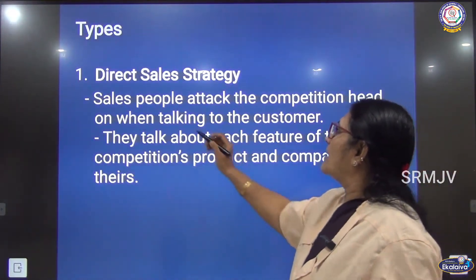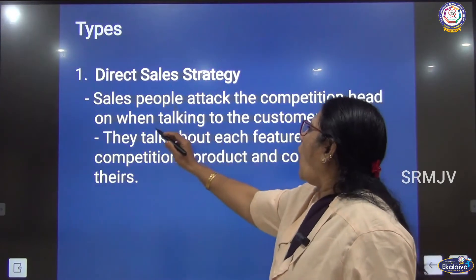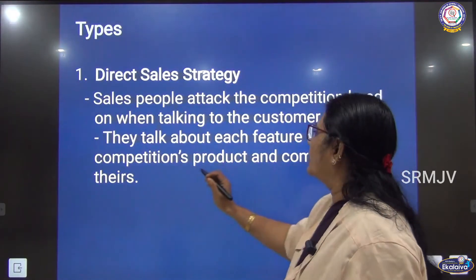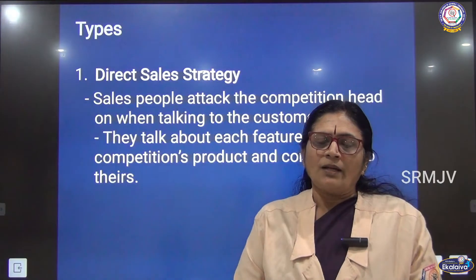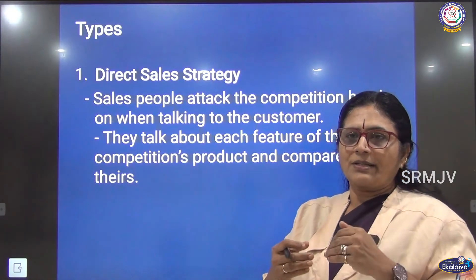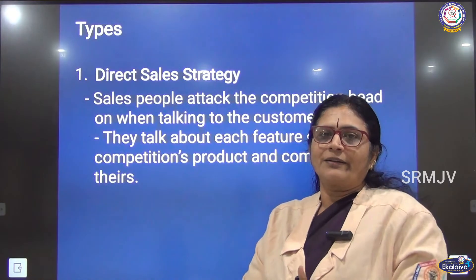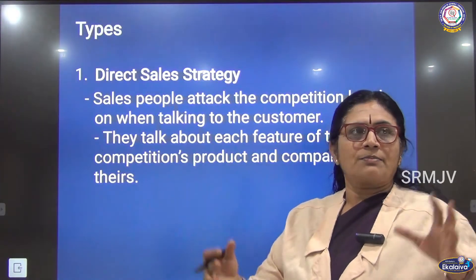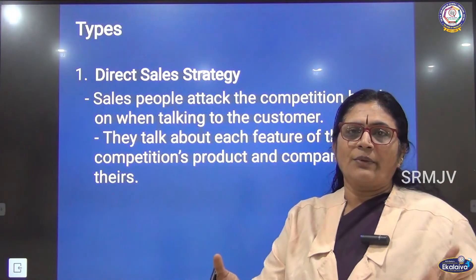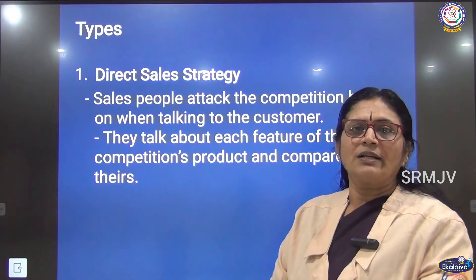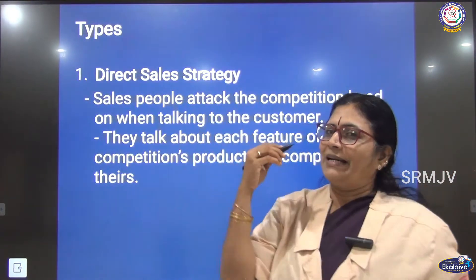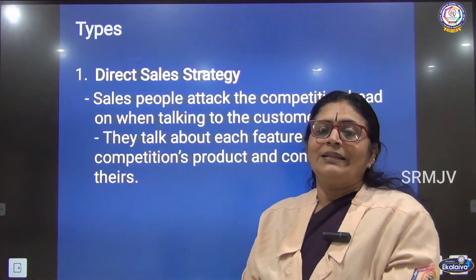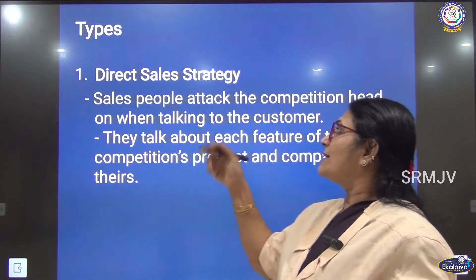Direct sales is when people attack the competition head-on; when talking to the customer, they compare each feature of the competition's product to theirs. For example, a sales representative goes and meets the customer personally — whether for a vacuum cleaner, air conditioner, smart board, or new cell phone — and speaks about it. This direct sales strategy is also called a negative sales strategy because when explaining the product, the representative also explains the negative aspects of the competitor's product.